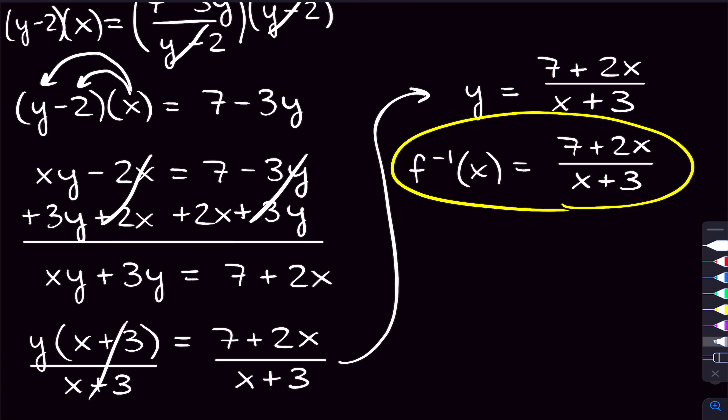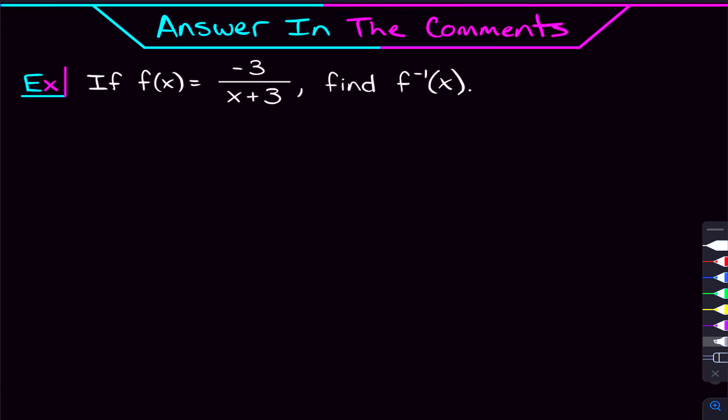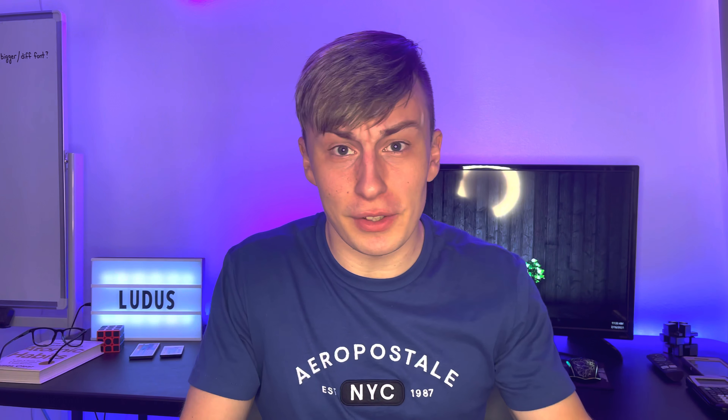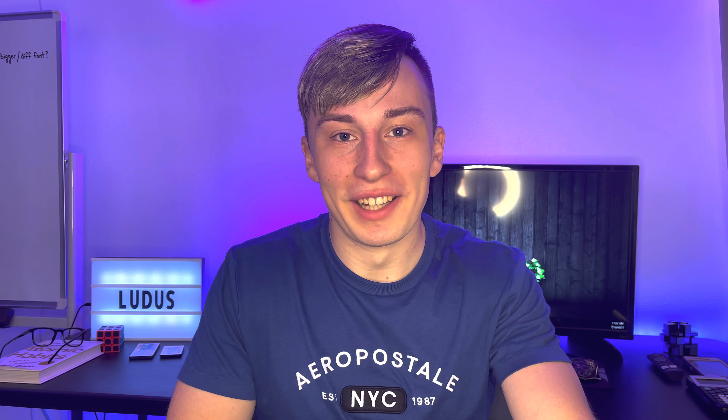So that is inverse functions in a nutshell — that's how to find the inverse function of F, and we also talked about what inverse functions actually are. Here's a problem for you to try and answer in the comments: F of X is negative three over X plus three — find the inverse function of F. Give that a shot and let me know your answer. If you have any questions, let me know in the comments. I also have that extra video where you and I solve 10 more inverse function problems — especially if you have a quiz or test coming up, check it out in the description. And make sure you're subscribed to the channel!